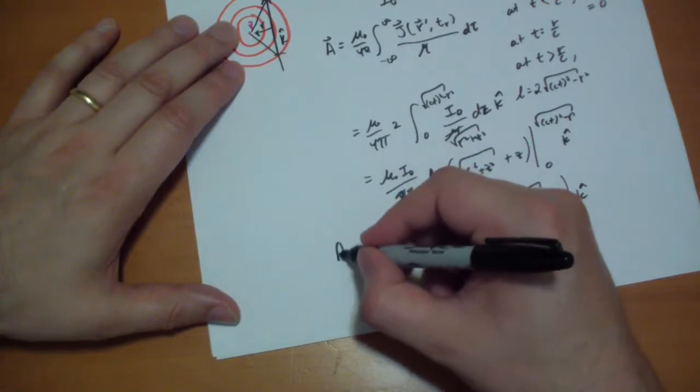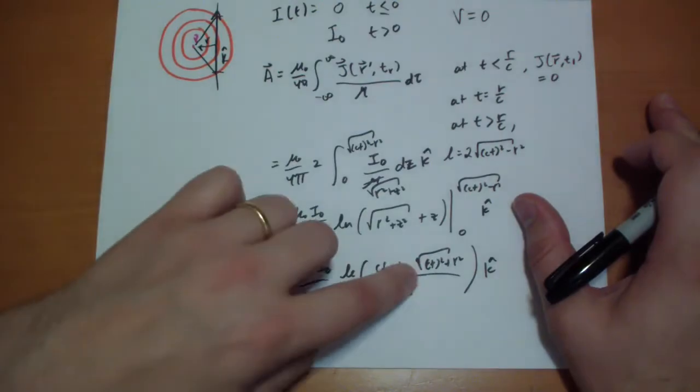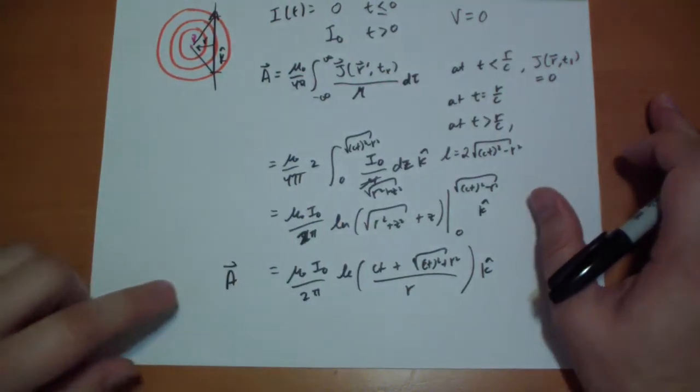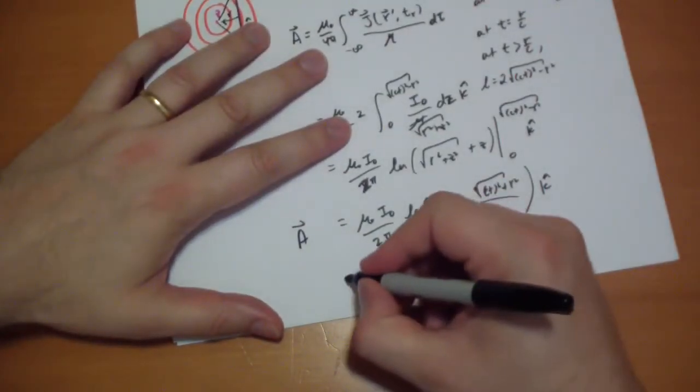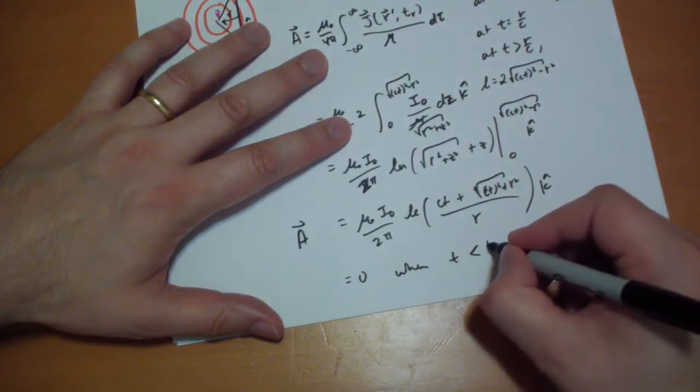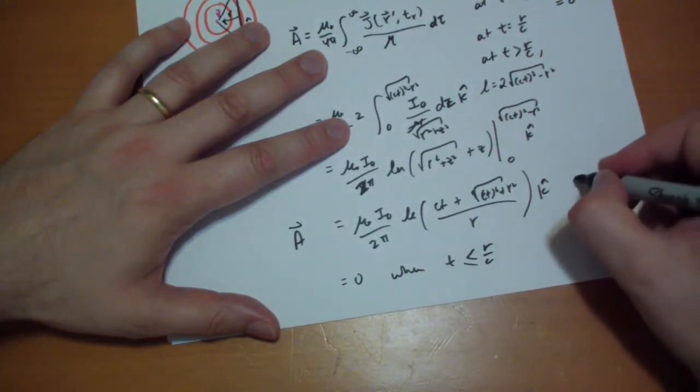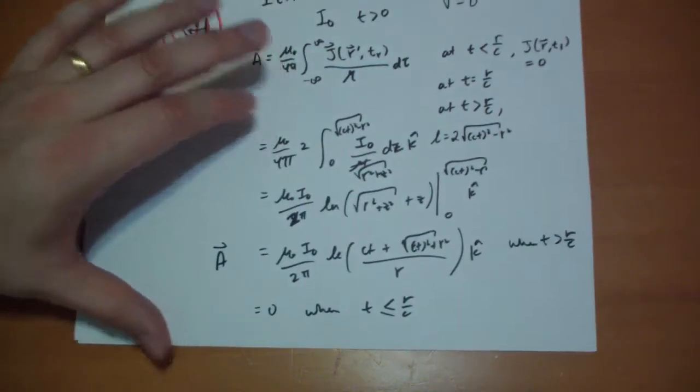So this is your a-field. And this a-field, you see, tr is gone. We just have t. So now we can calculate any point in time and space what the a-field is going to be. And it's going to be zero when t is less than r over c, less than or equal to, when t is greater than r over c. There we go.